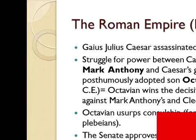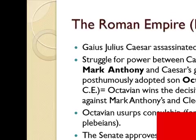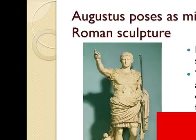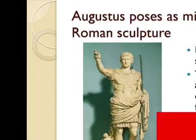The Roman Empire, 27 BCE to 180 CE. Julius Caesar was assassinated in 44 BCE, sparking a struggle for power between Caesar's lieutenant Mark Antony and Caesar's grand-nephew and posthumously adopted son Octavian (63 BCE). Octavian won the decisive sea battle at Actium against Mark Antony and Cleopatra's forces. He assumed consulship, the Senate approved his rule for life, and bestowed on him the title Augustus — the revered one. A marble statue of Augustus as military leader from 20 BCE shows at his feet Cupid and a dolphin, reminders of his alleged descent from Venus, mother of Aeneas. Compare to the Doryphoros by Polyclitus.